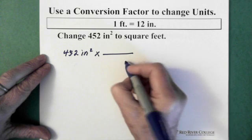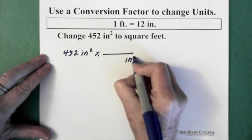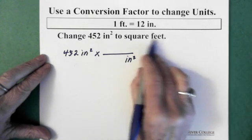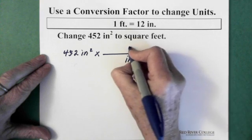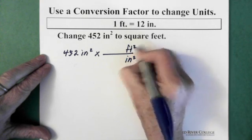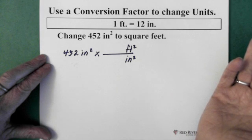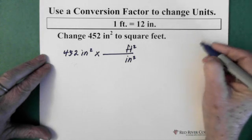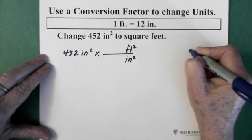We want inches squared to be gone, so that goes down here. Inches squared. We want to have square feet, so our feet squared go up here. But, what's the relationship? We're not sure. So, then we say, alright, go over here.